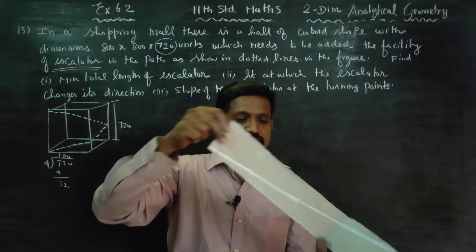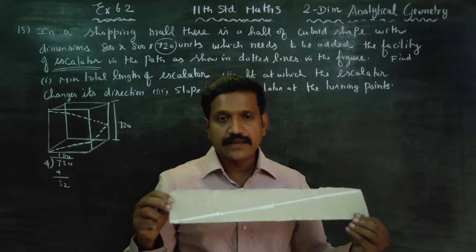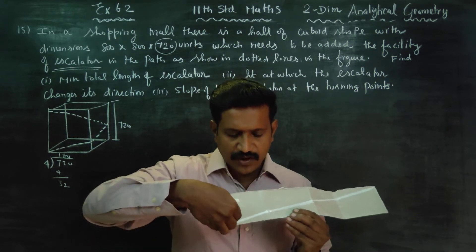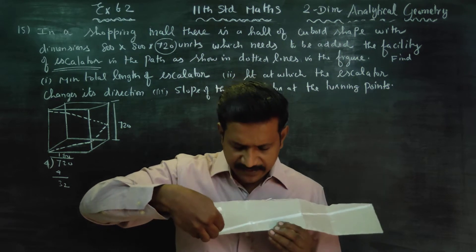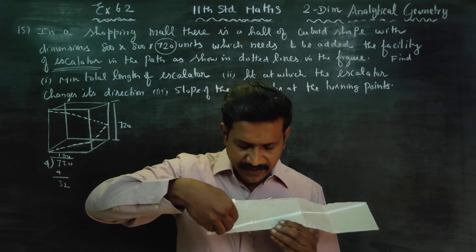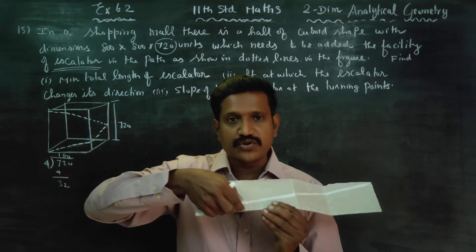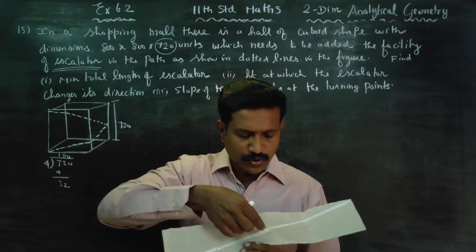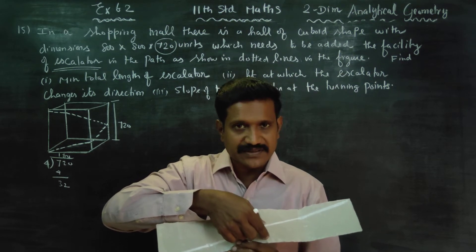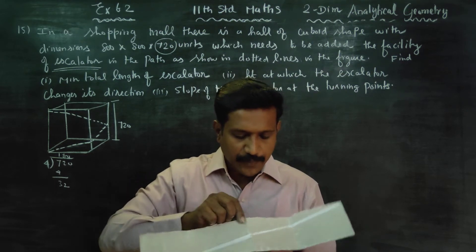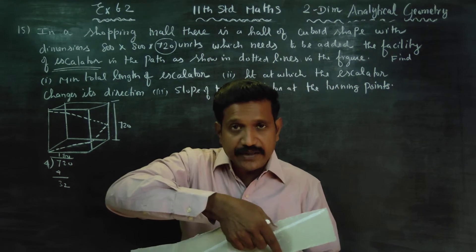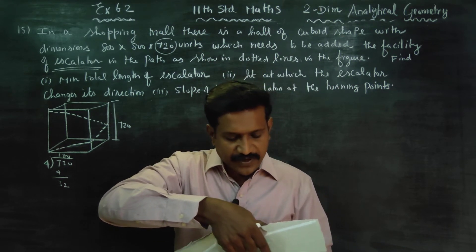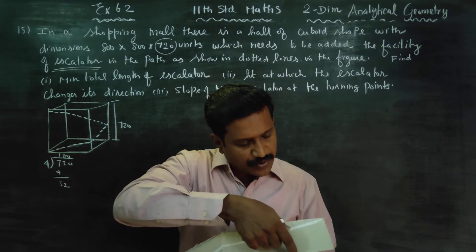The escalator height per wall is 180. Going up: 180, then 180+180=360, then 360+180=540, then 540+180=720. So the escalator passes through heights of 180, 360, 540, and 720.